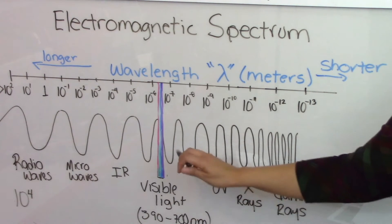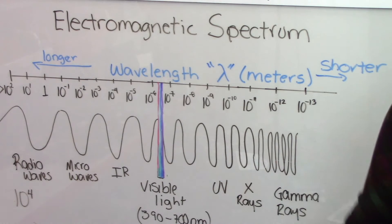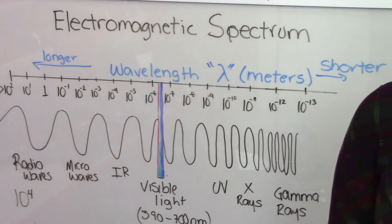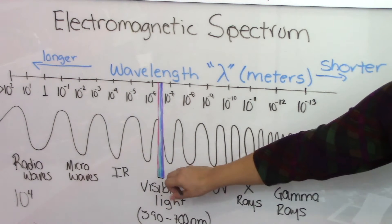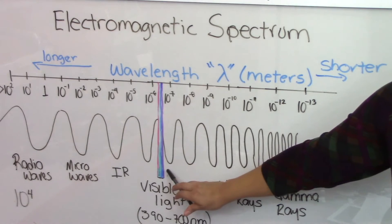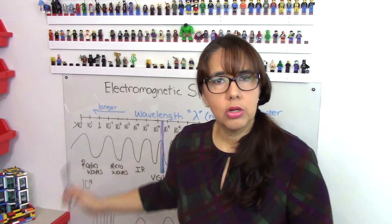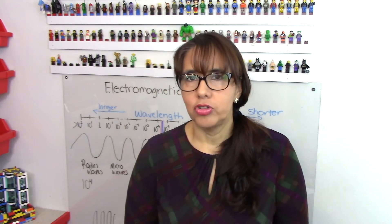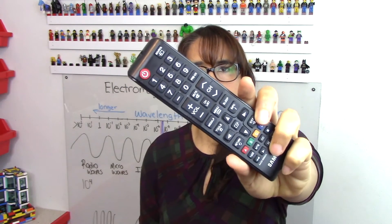For a very long time people thought that visible light were the only waves that existed, and this was the only part of the spectrum that they were analyzing. Let's now pick a region of the electromagnetic spectrum and talk about an application — how about remote controls?